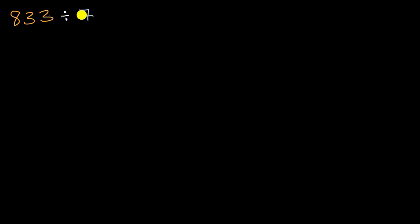So the first thing I will do is I will rewrite this as 833 divided by seven. So you can view these as the same expression. The reason why we do it this way is it formats it so it's a little bit easier to do our division with partial quotients.